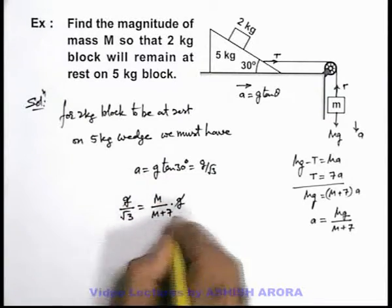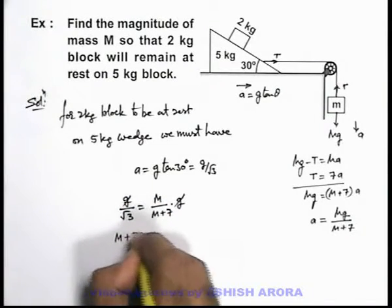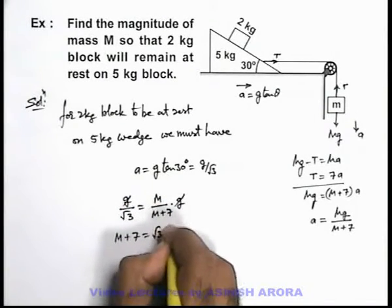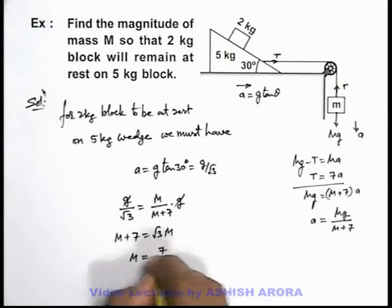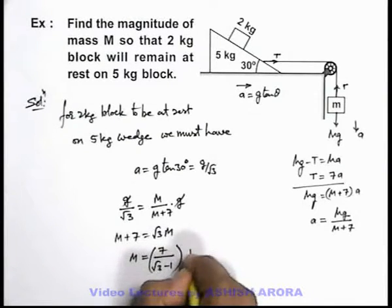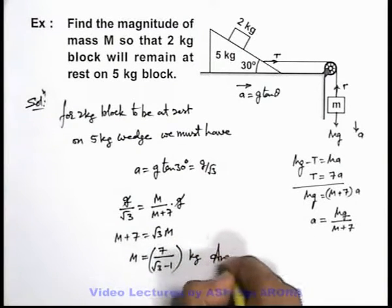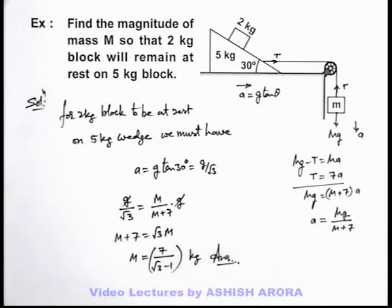Here g gets cancelled out and we'll get m + 7 = √3m. Or directly the value of m we can get as 7/(√3 - 1) kg. That is the answer which we were required to evaluate.